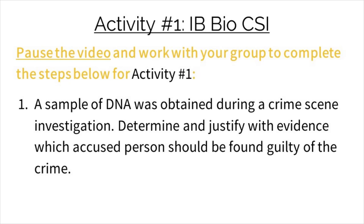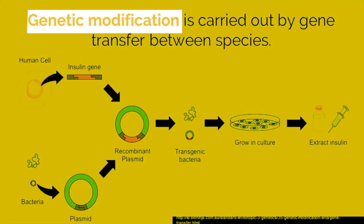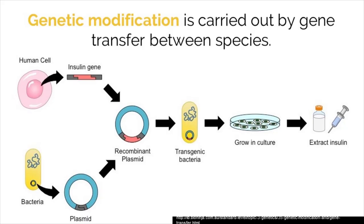Advances in biotechnology have also given us the ability to change organisms through genetic modification. Genetic modification is the process of changing an organism's genome by transferring genes from one species to another. Because the genetic code is universal, an organism can express a new trait if the appropriate gene is introduced into its genome. The process of gene transfer can be summarized in four key steps.